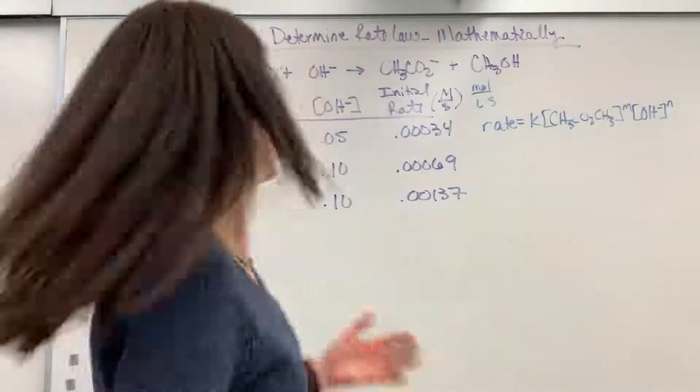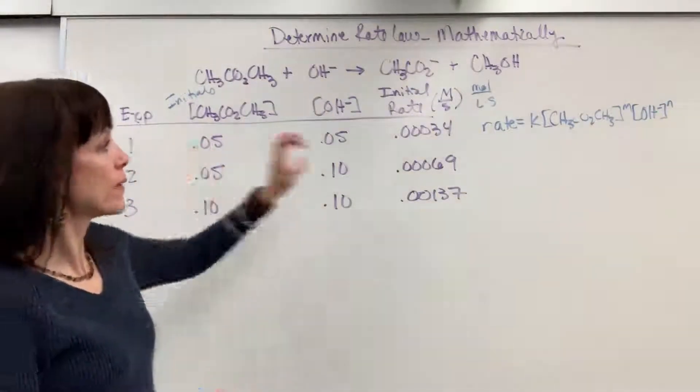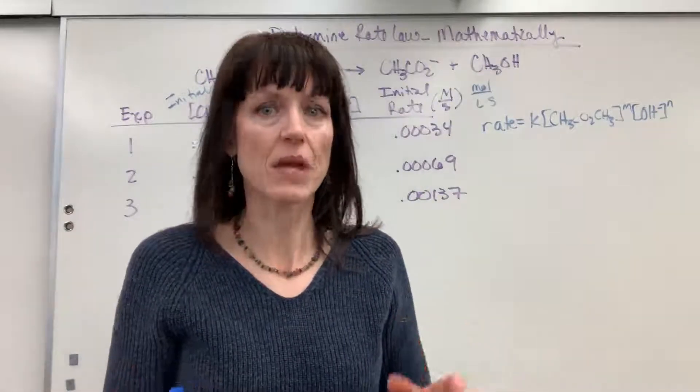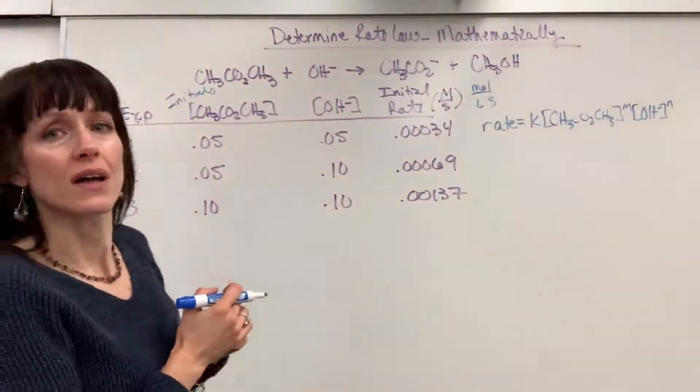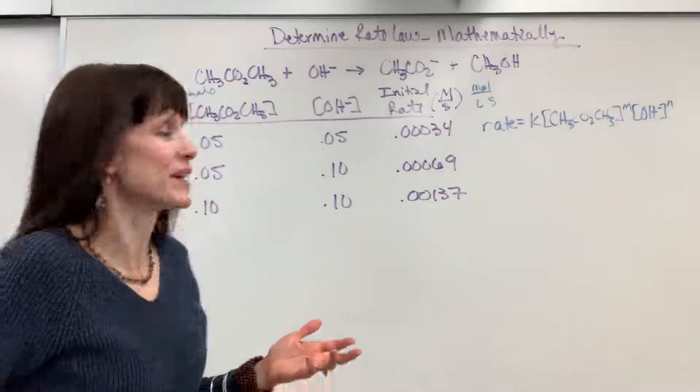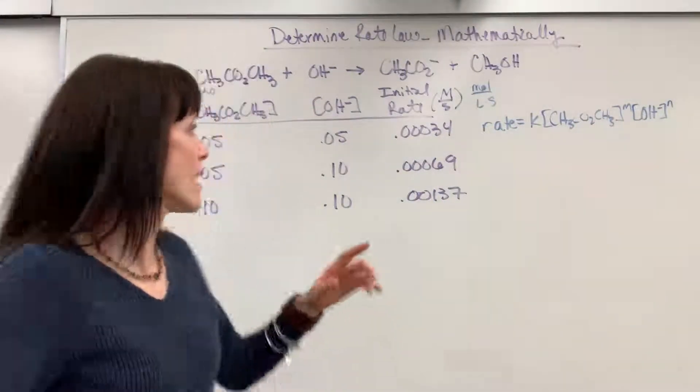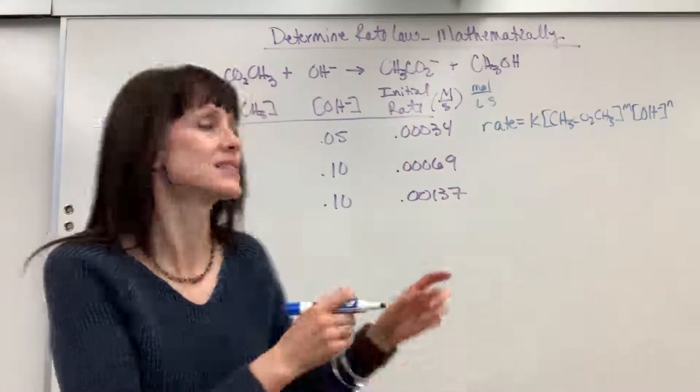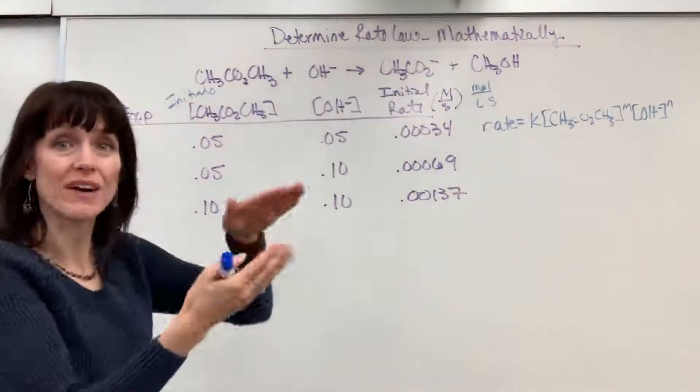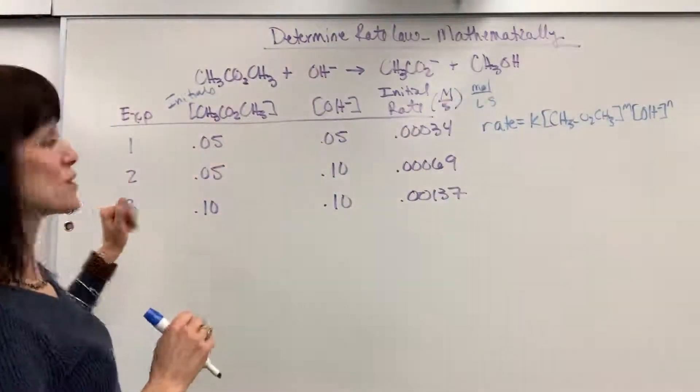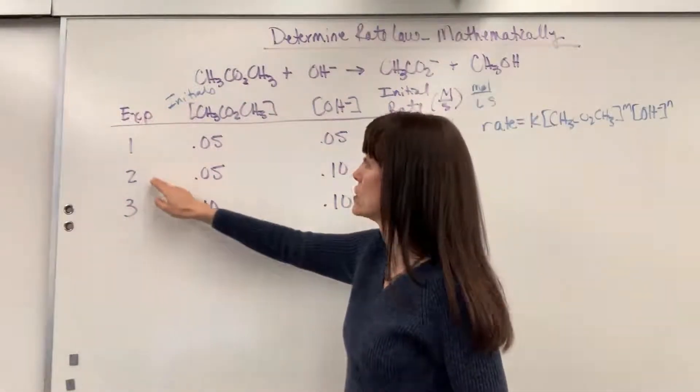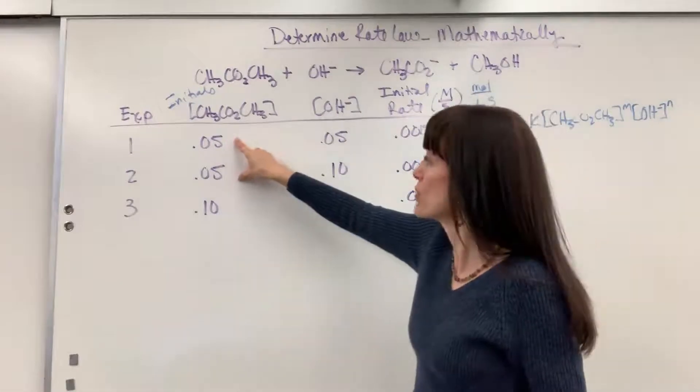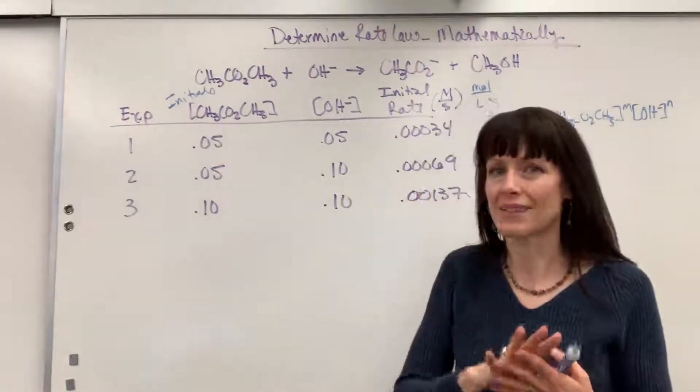So what we're going to do is pick two experiments, plug both of them into this rate law, and divide them. It's going to be this huge division sign. So watch this with me. As I look, I'm going to rig this. I'm going to pick two experiments in which one of my reactants here will cancel when I divide them. That means their concentrations have to be the same, so when we divide, they cancel. So looking at this right off, I'm going to choose experiments one and two, because the methyl acetate, they have the same concentration. Those, if I divide them, will cancel out to a one.